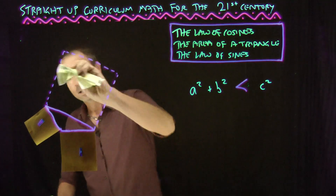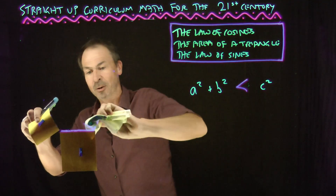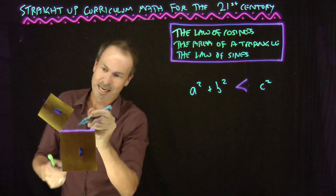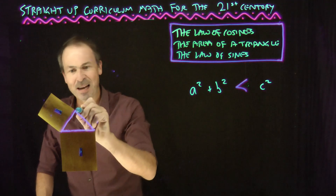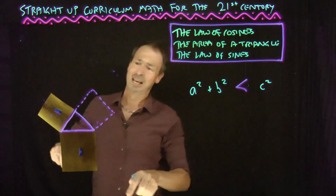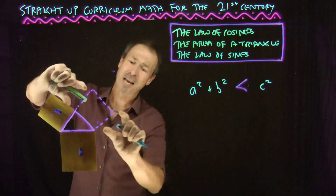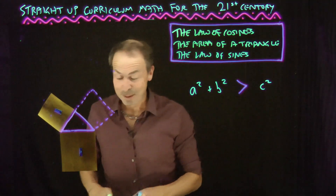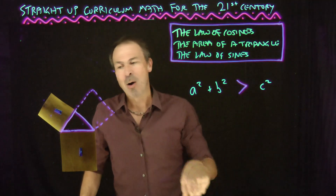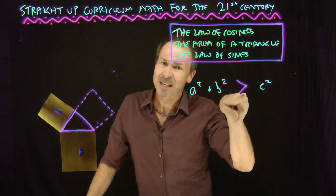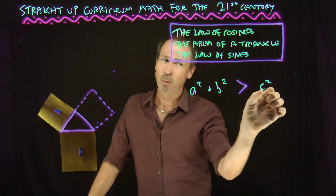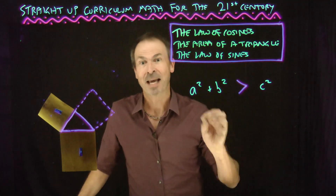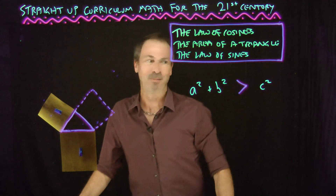Or if I tilt it the other way to make an acute angle, I get a smaller square on the hypotenuse. So a² + b² is now bigger than c². The Pythagorean theorem is true only for right angles. But I want to quantify how off this theorem is — can we get a formula for the error term? And the answer is yes!